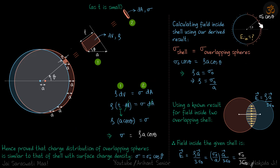We have already proven that this charge distribution is similar to this. So calculating field inside the shell using our derived result. Sigma of shell equals sigma of overlapping spheres. Sigma of shell is given as sigma not cos theta. And of overlapping spheres, we calculated sigma is rho A cos theta. So if the distribution is same, then rho A is sigma not or rho is sigma not by A.